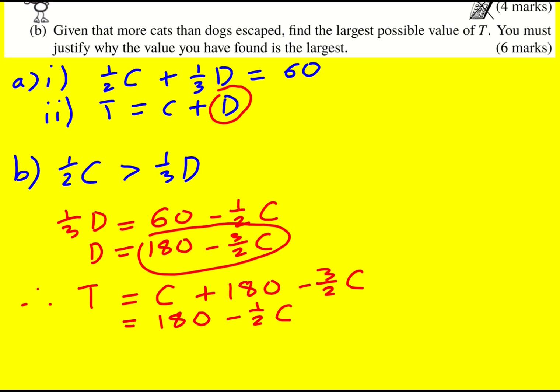I've made D the subject. I just want to quickly talk about the fact that I could have made C the subject. I could have said instead that one-half C equals 60 minus one-third D, and therefore C is going to be 120 minus two-thirds D. And then T is going to equal 120 minus two-thirds D plus D.